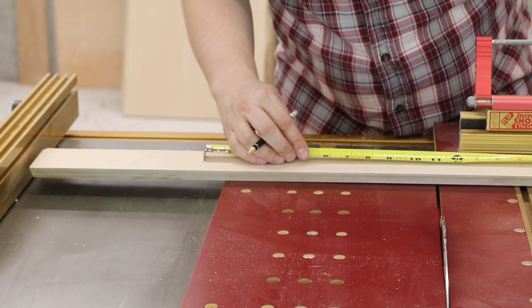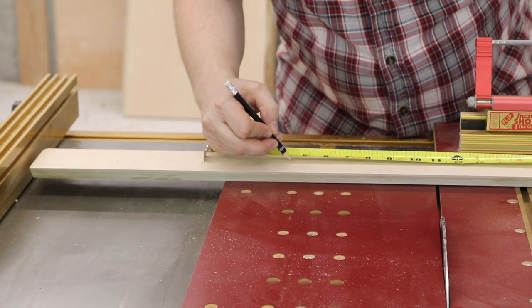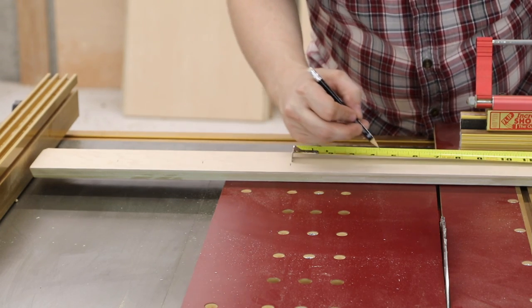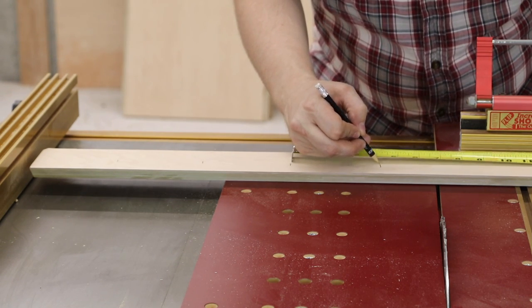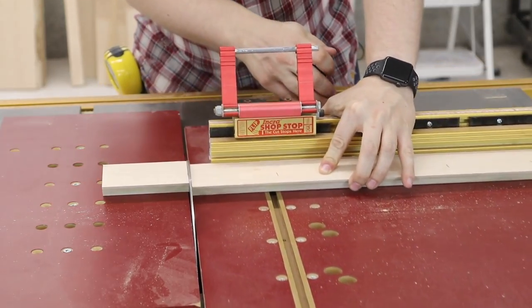And then the other strips I haven't used yet I marked off parts four inches long along the entire length. And then cross cut all those pieces at the table saw.